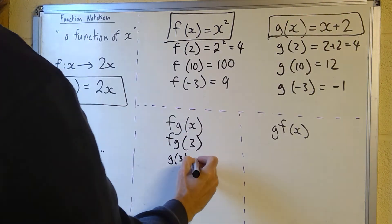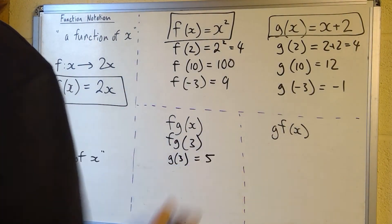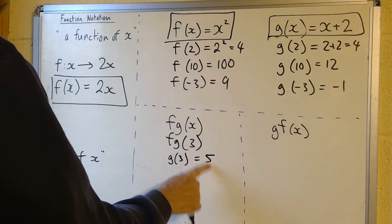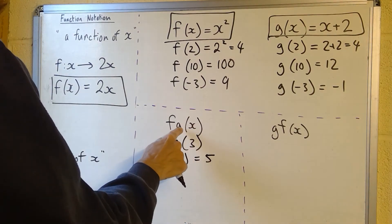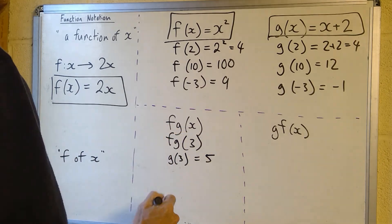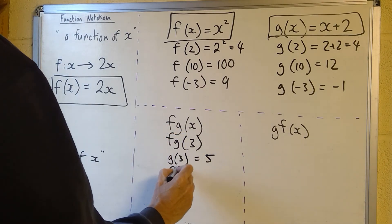And then I use this output as the input into my f function. So I do the g function first and then the f function. So I do f of the output here of 5 and that was squared, so that's going to be 25.